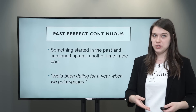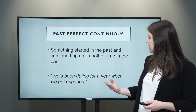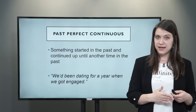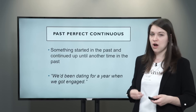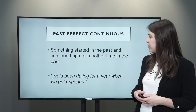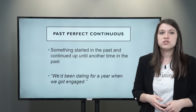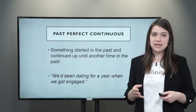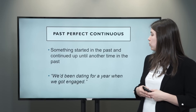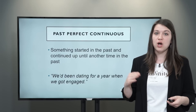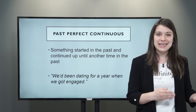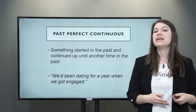Now the past perfect continuous — this is something that started in the past and then continued up to a specific time, but in the past. So everything is in the past here, but it was ongoing for a time. For example: We'd been dating for a year when we got engaged. We use had been plus the -ing ending. We had been dating — this was ongoing in the past, in this case for one year — and then the next action, to get engaged, is in the past simple.